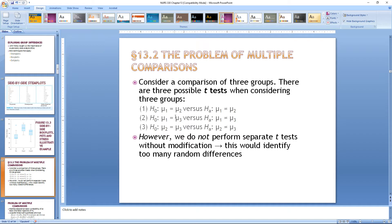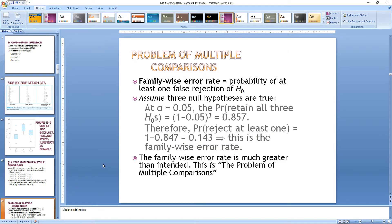Consider the comparison of these three groups. There are three possible t-tests when considering the groups. For our null hypothesis, if we were to look at these individually, you have group 1 equaling group 2, group 1 versus group 3, and group 2 versus group 3, measuring the difference between each one. However, we don't perform separate t-tests without modification. This would identify too many random differences. You can't keep performing t-test after t-test to compare differences between groups. If you keep doing that, you're going to increase the likelihood of a type 1 error. That's the problem of multiple comparisons, called the family-wise error rate, which is the probability of one false rejection of the null hypothesis.